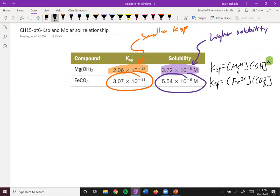The top equation is overall to the third power. The bottom equation is overall only to the second power. And so we can't use KSP to say which is more soluble if the stoichiometry is not the same.